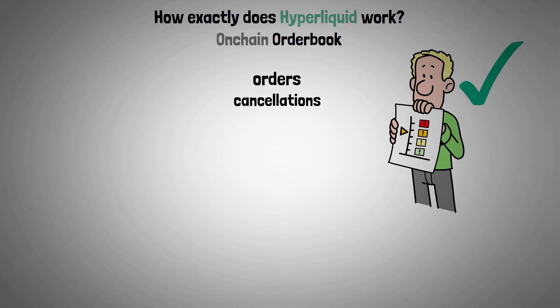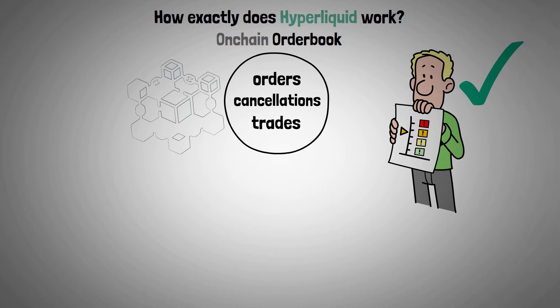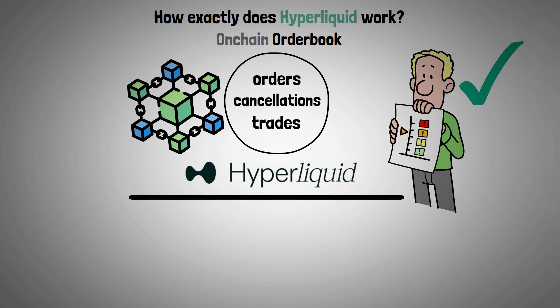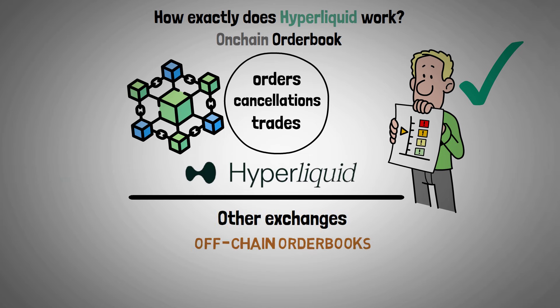On-chain order book: to guarantee total transparency, all orders, cancellations, and trades are completed and documented on-chain. Hyperliquid sets itself apart from other exchanges that use off-chain order books with this feature.